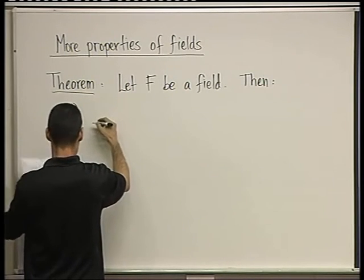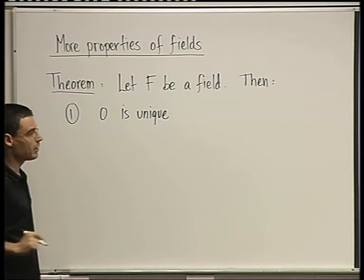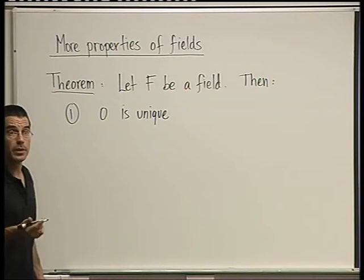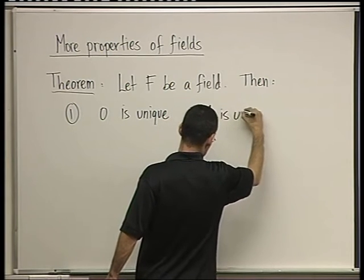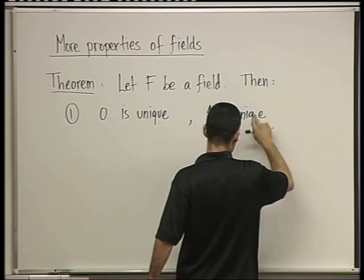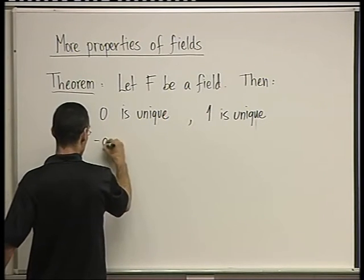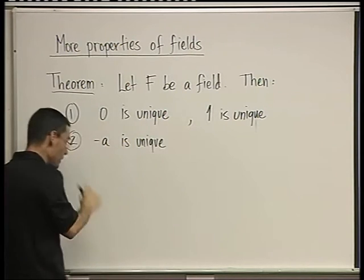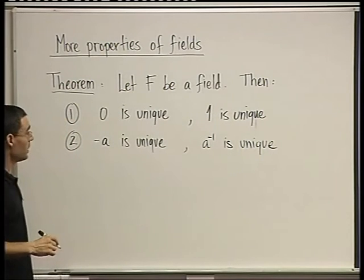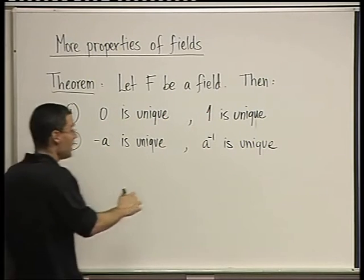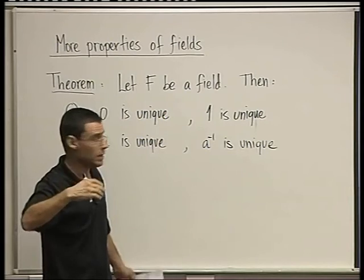Here are the properties I want to list. One: zero is unique. In a field there can't be more than one element satisfying the role of zero — namely, that when you add any number to it, it stays invariant: a plus zero equals a. There can only be one zero. And in fact one is unique as well — there's a unique additive identity and a unique multiplicative identity. Two: minus a is unique. Any element can only have one additive inverse.